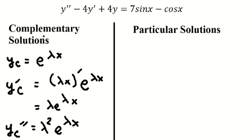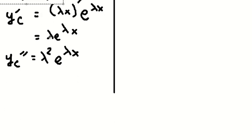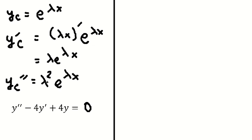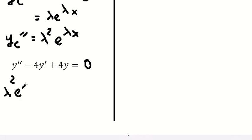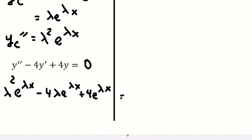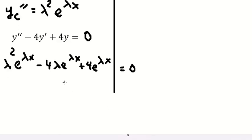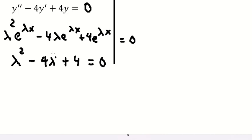Because this is about the complementary solution, that means this one equals to zero. So we need to substitute the second derivative, first derivative, and y into the equation. We then divide both sides by e to the power of λx, giving us λ² minus 4λ plus 4.